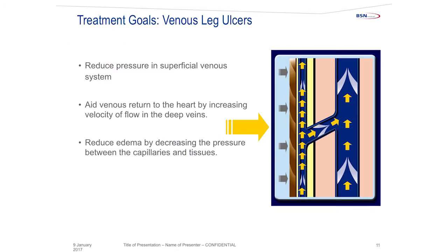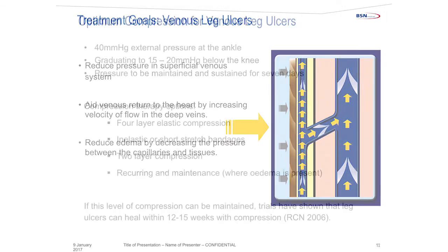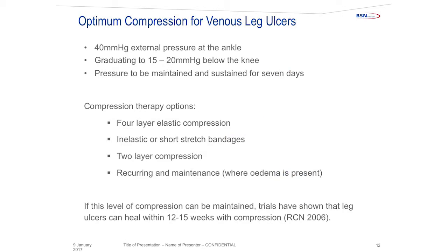The treatment goals for venous leg ulcers are to reduce pressure in the superficial venous system, aid in venous return to the heart by increasing velocity of flow in the deep veins, and reduce edema by decreasing the pressure between the capillaries and the tissue. Compression therapy options include four-layer elastic compression or multi-layer bandaging, inelastic or short stretch bandages, two-layer compression kits, and medical leg wear to prevent recurrence and for maintenance when edema is present.